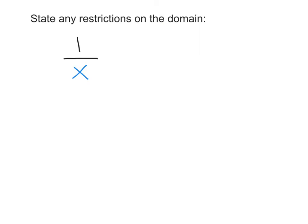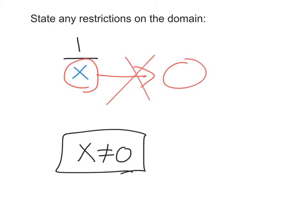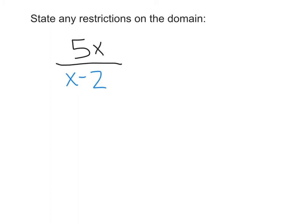Let's identify restrictions on the domain. We've got 1 over X. We know the denominator of a fraction cannot equal 0, so in this case the restriction is X cannot equal 0.